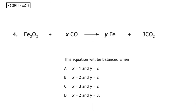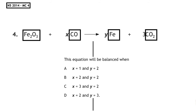This question is from the National 5 2014 multiple choice, question 4. We're given an equation and asked to balance it. The first step is to put boxes around each entity, then write our shopping list — remember ho ho ho. We have iron (Fe), carbon (C), and oxygen (O), mirrored on the other side.